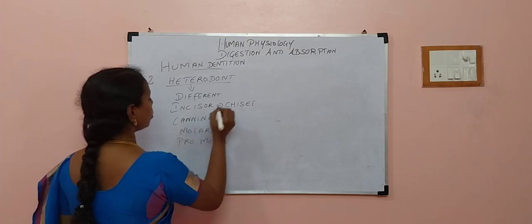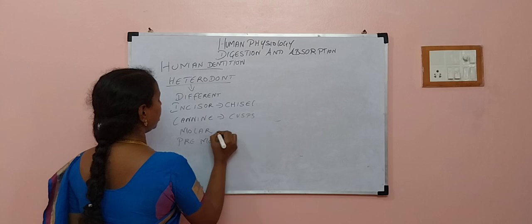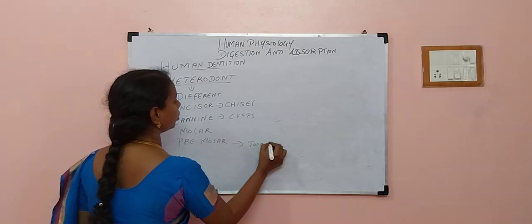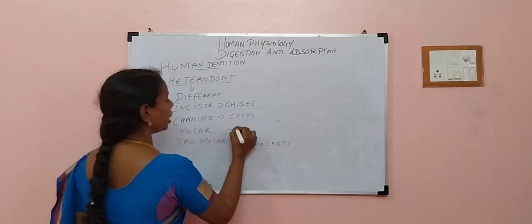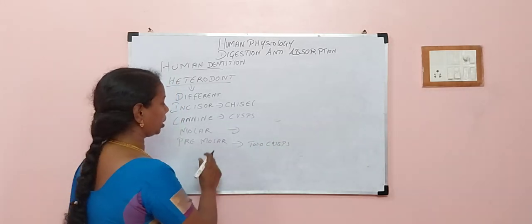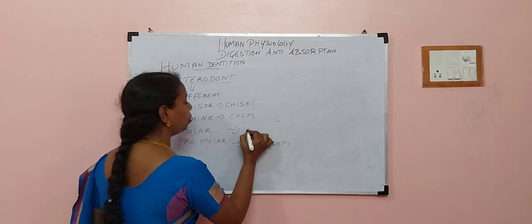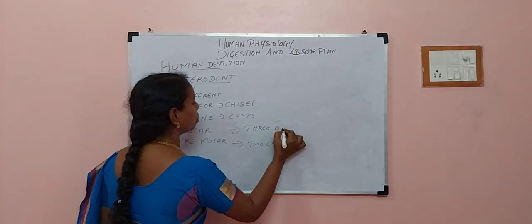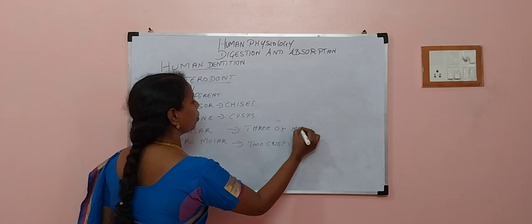Canine will be having one cusp. Premolar will be having 2 cusps. The crown-like structure is what we call a cusp. Molar will be having more than 2 — so 3 or more, we consider it as molar.